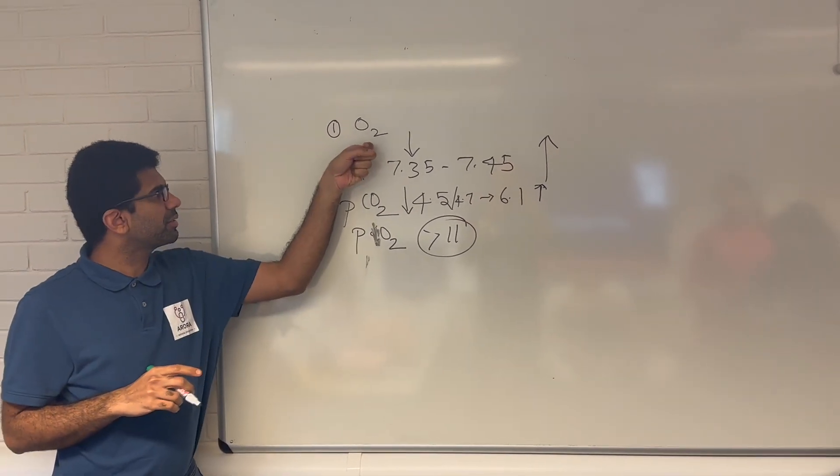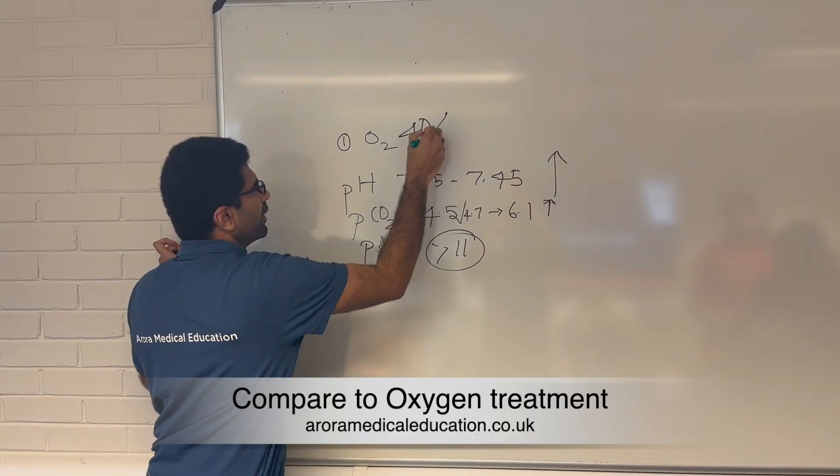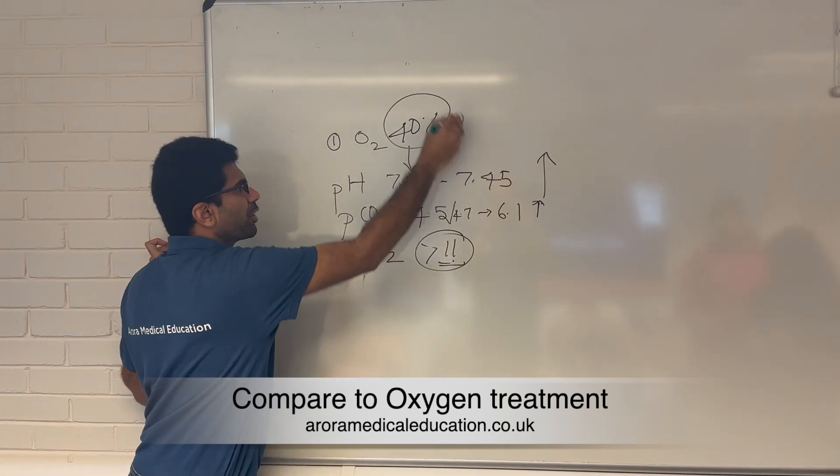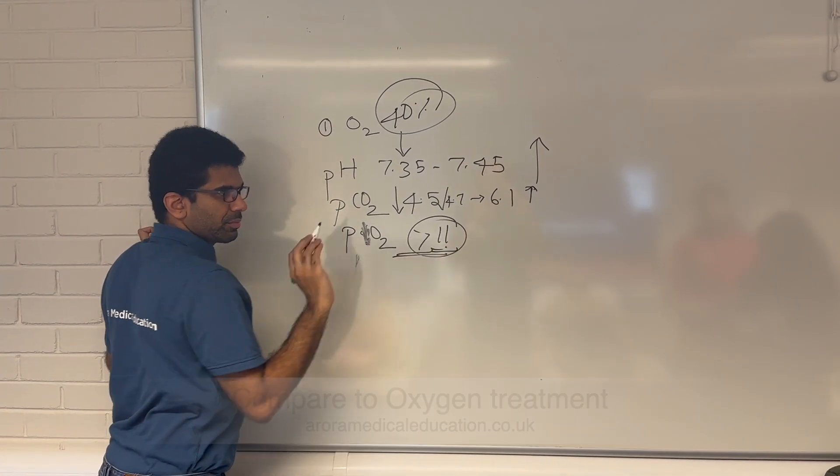That's why I am saying if you compare this, let's say you put it as 40%, then you can't say this is normal. This is abnormal because you are giving 40% oxygen to maintain the saturations.